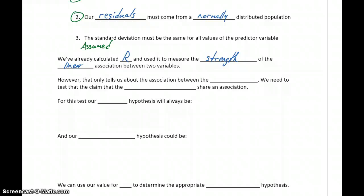Since this only tells us about the correlation in our sample data, we need to test the claim that the two populations share an association. We're going to use that value for R as our estimator for the population correlation coefficient and see if we can conclude that the populations share an association.